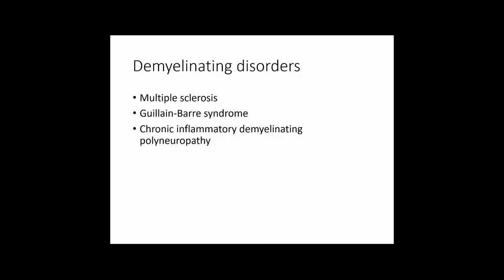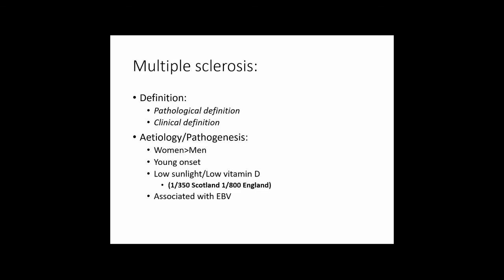Moving on to the demyelinating conditions, the conditions covered include multiple sclerosis, Guillain-Barré syndrome, and chronic inflammatory demyelinating polyneuropathy. Starting off with multiple sclerosis.